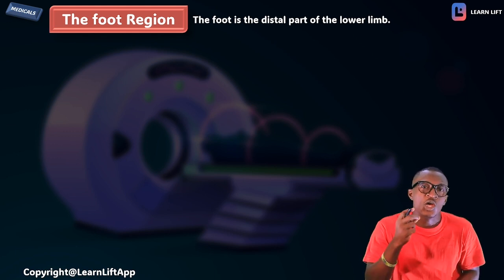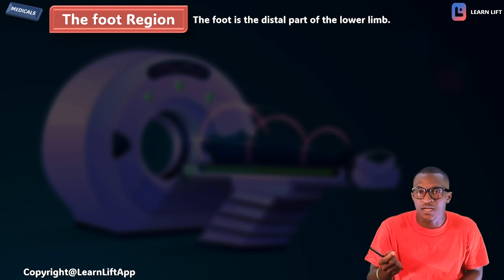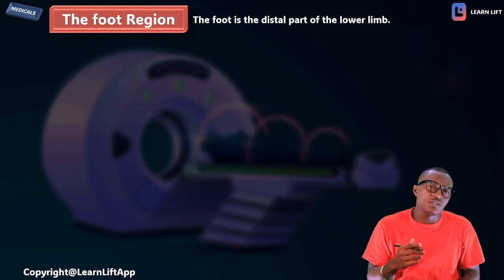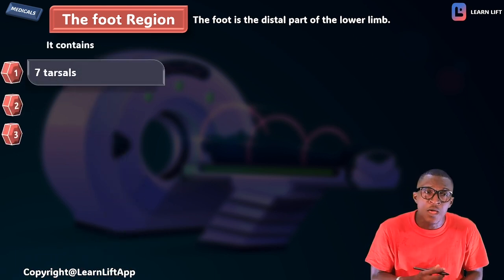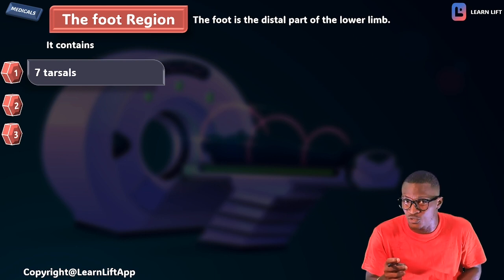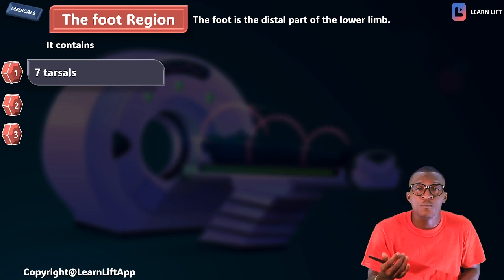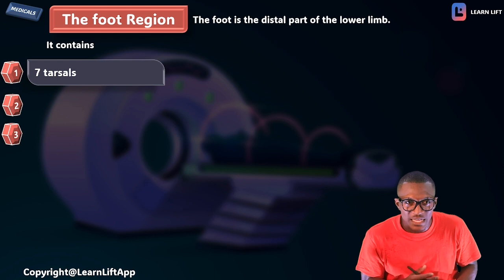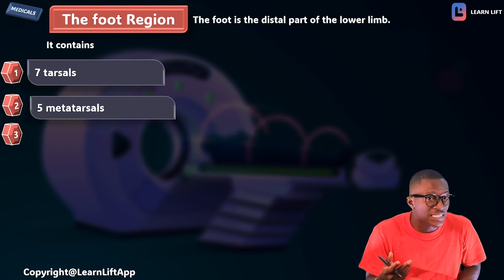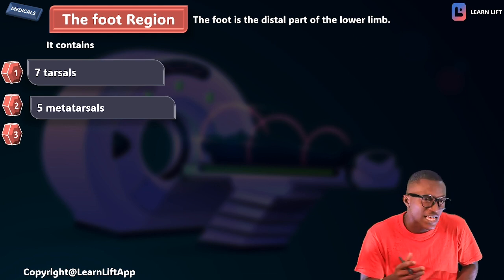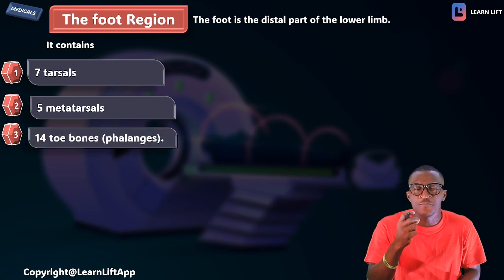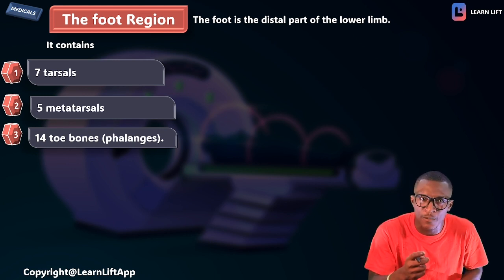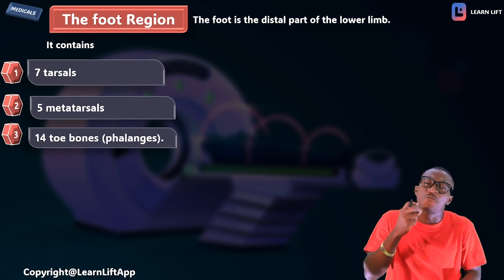The foot is the distal part of the lower limb — proximal means close, distal means far. The foot consists of three things: number one, seven tarsal bones (the upper limb has eight carpal bones, but the lower limb has seven tarsal bones); number two, five metatarsal bones; and number three, fourteen phalanges.